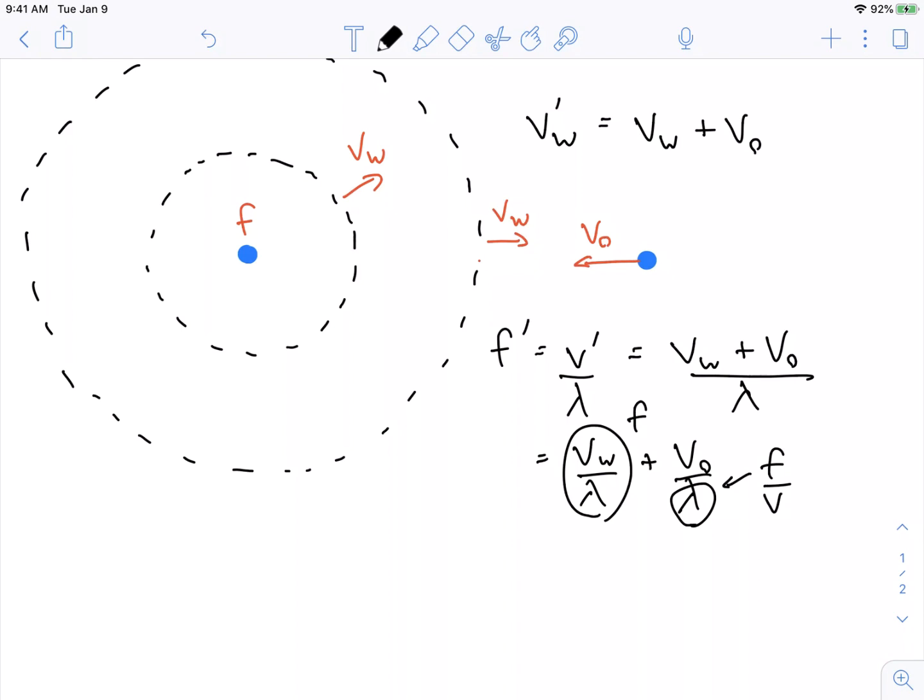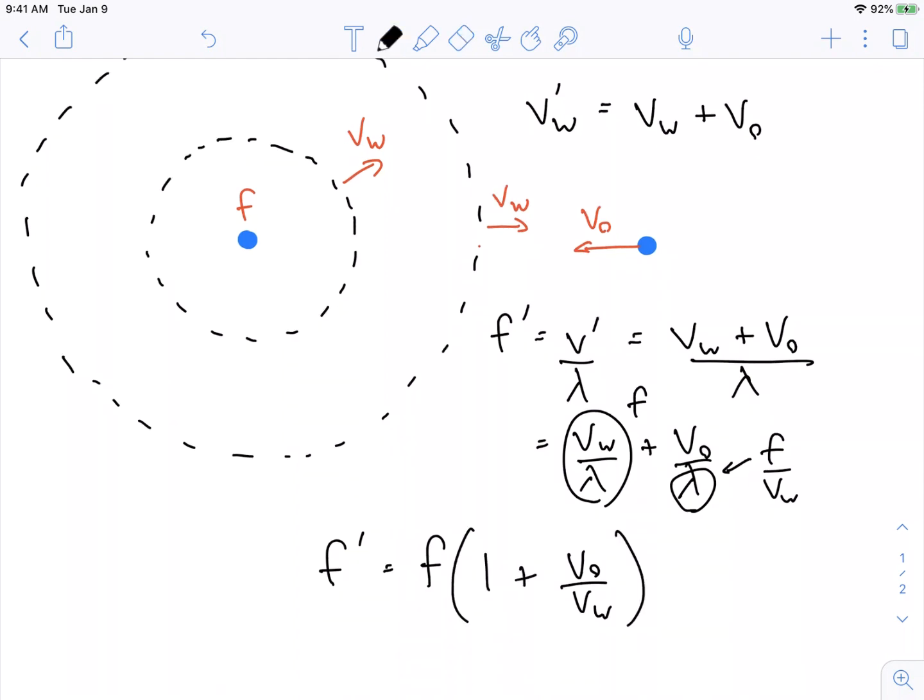So we can write this whole thing as equal to f plus the frequency times the velocity of the observer over the velocity of the wave. Then we factor out that f, and we're left with this. So this is one of our second big formulas.